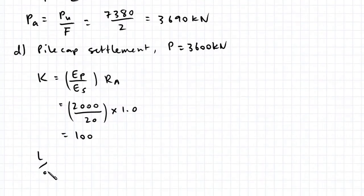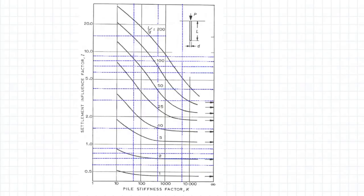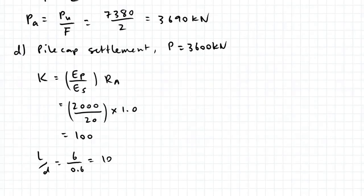Our length to diameter ratio is 6 over 0.6, which is 10. Now we can go to this chart. Our K value is 100 and L over D is 10. If we project across, that gives us an i value of approximately 1.85.